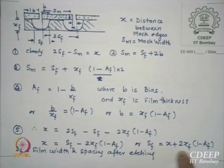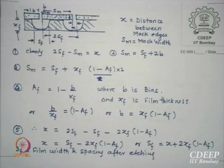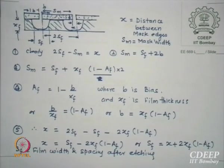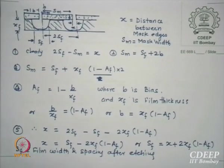From here one can see: SF equals X plus 2XF times this formula. I can make SF equal to X under two conditions. One is AF equal to 1. The other possibility: if XF is 0 or very thin — smaller XF means the film is very thin, so lateral etching will not have enough time to go deeper. So essentially if the film is thin, X approximately equals SF; but if the film is thicker, lateral etching will happen and X will not be the same as SF.